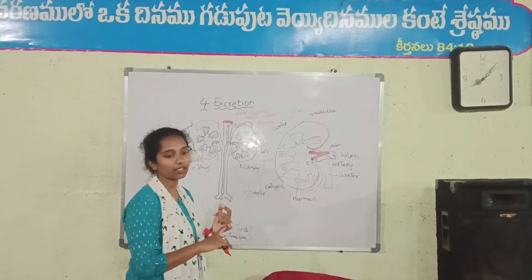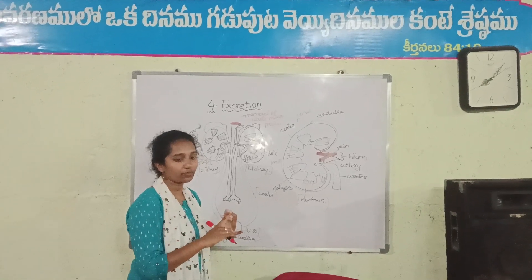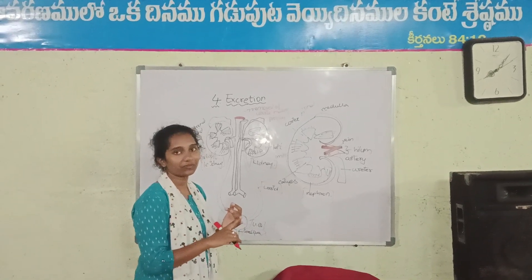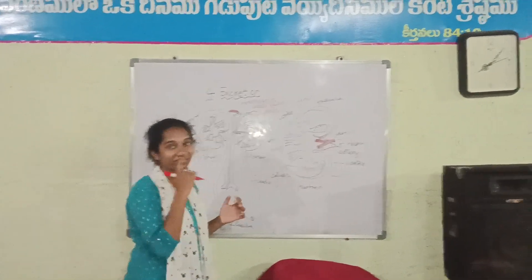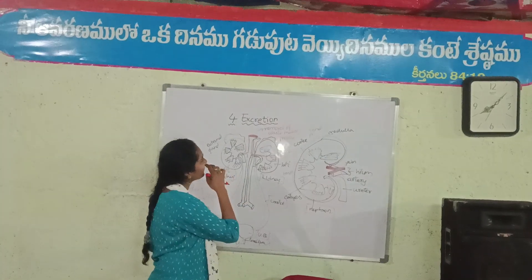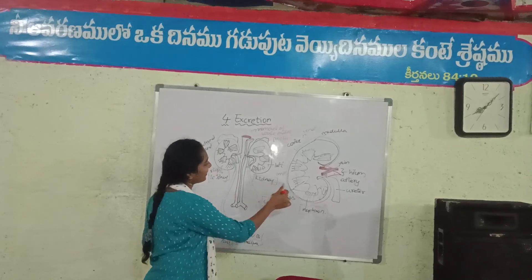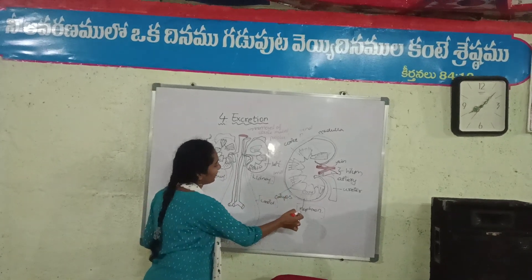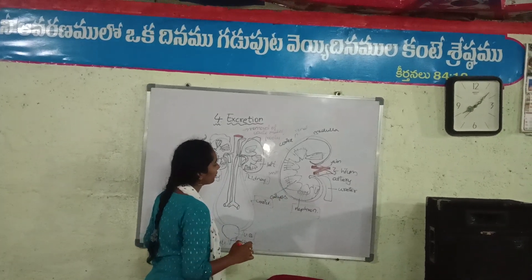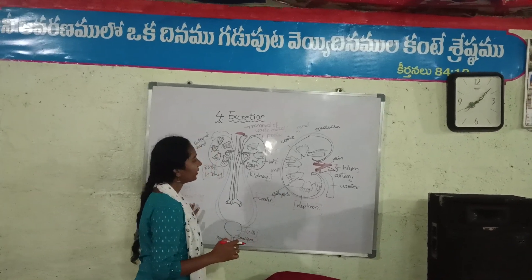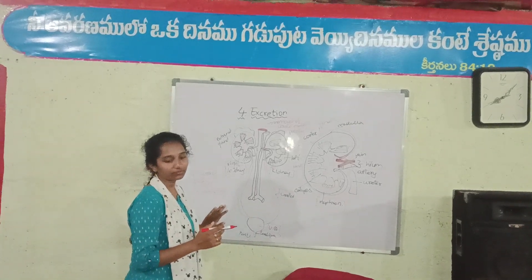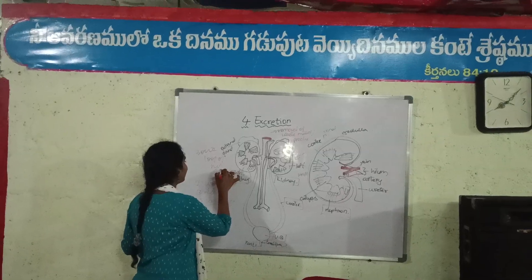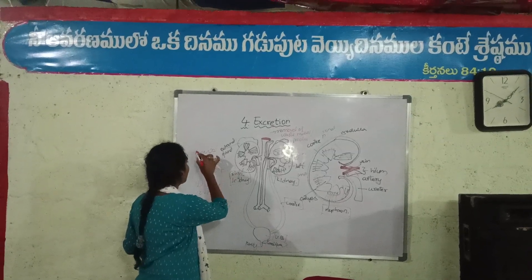The nephron is the structural and functional unit of the kidney. The kidney is made of nephrons. Collecting ducts are also part of the nephrons.